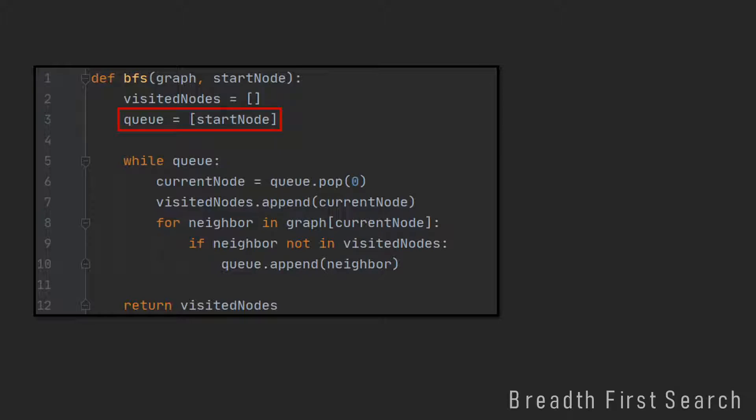So we initialize our queue with only the start node in it. And then we do the following while the queue is not empty. We pop the queue at index 0, which always gives us the first element in it, and call it current node. And then we mark the current node as visited by appending it to our list of visited nodes. And now we iterate through all neighbors of the current node, and we just check if the neighbor is already visited. And if it's not already visited, we append it to our queue. And at the end we just return the list of visited nodes.